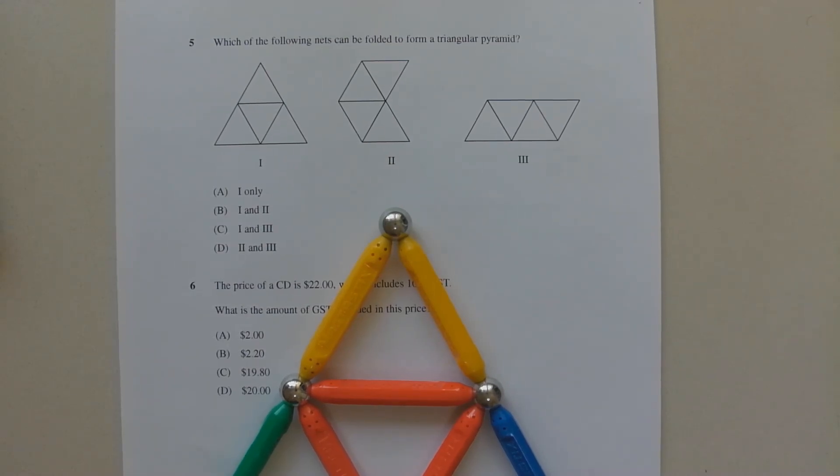Now in this question, the solid shape is a triangular pyramid, and we want to find which one of these three nets, and there could be more than one of them, that when folded will form a triangular pyramid. I'm going to demonstrate this using a set of magnetic sticks that can be folded and formed to show which one of these three will form a triangular pyramid when folded.